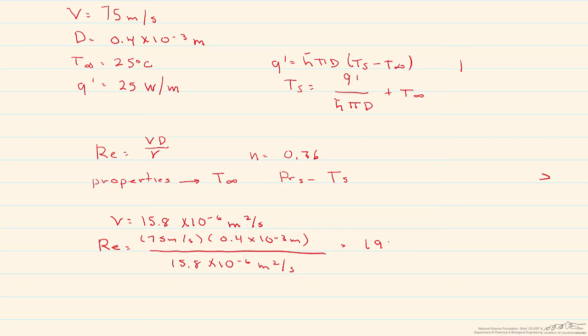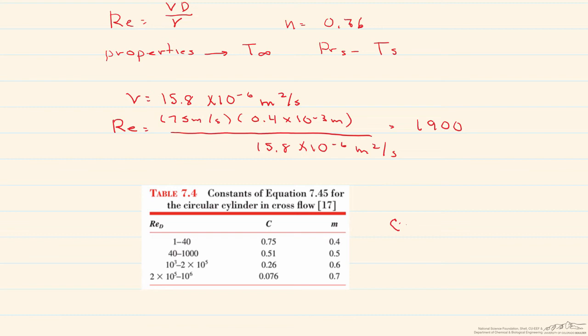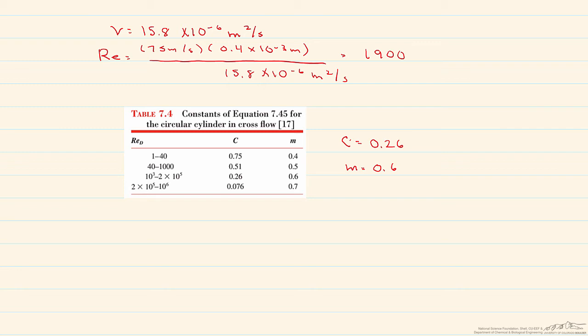Now in order to find our C and our M, we look it up on the table below based on the Reynolds number. In this case, our C is going to be equal to 0.26, and our M is equal to 0.6.